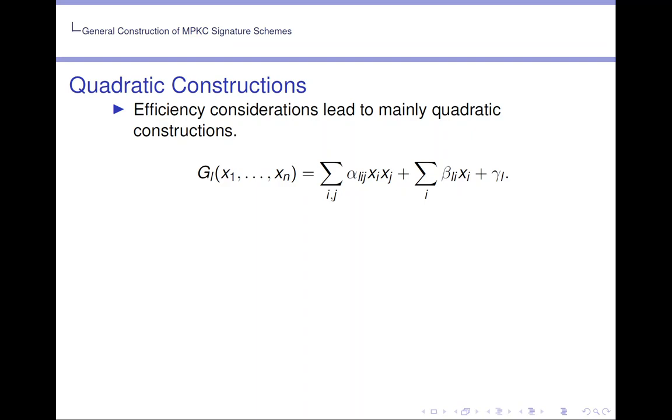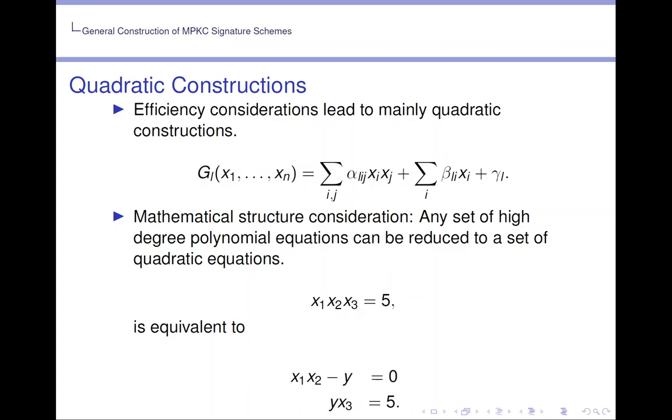Now for efficiency we largely look only at quadratic equations. Now we can justify this mathematically because any set of high degree polynomial equations can be reduced to a set of quadratic equations. As in this example we just essentially declare X₁ times X₂ to be Y and then we are led to the following quadratic system.